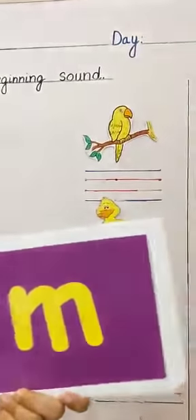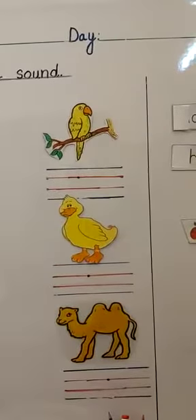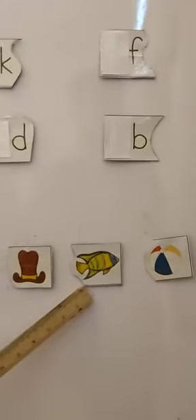Now let's play. This is a puzzle game. Here are some pictures and here are some letters. We have to match the letter with the picture. But first we are going to tell you about the pictures. This is an apple. This is a dog. It is a hat. And this is a lovely fish. This is a ball. And it is a kangaroo.